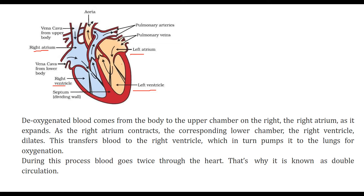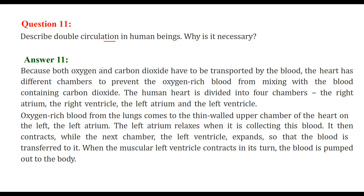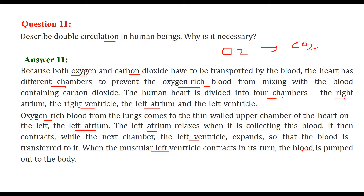The oxygen and carbon dioxide both have to be transported by the blood. That is why we have a heart with different chambers — to prevent oxygen-rich blood from mixing with CO2-rich blood. Oxygen-rich blood from the lungs comes to the left atrium. The left atrium relaxes when collecting blood, then contracts, transferring blood to the left ventricle. When the muscular left ventricle contracts, the blood is pumped out to the body.